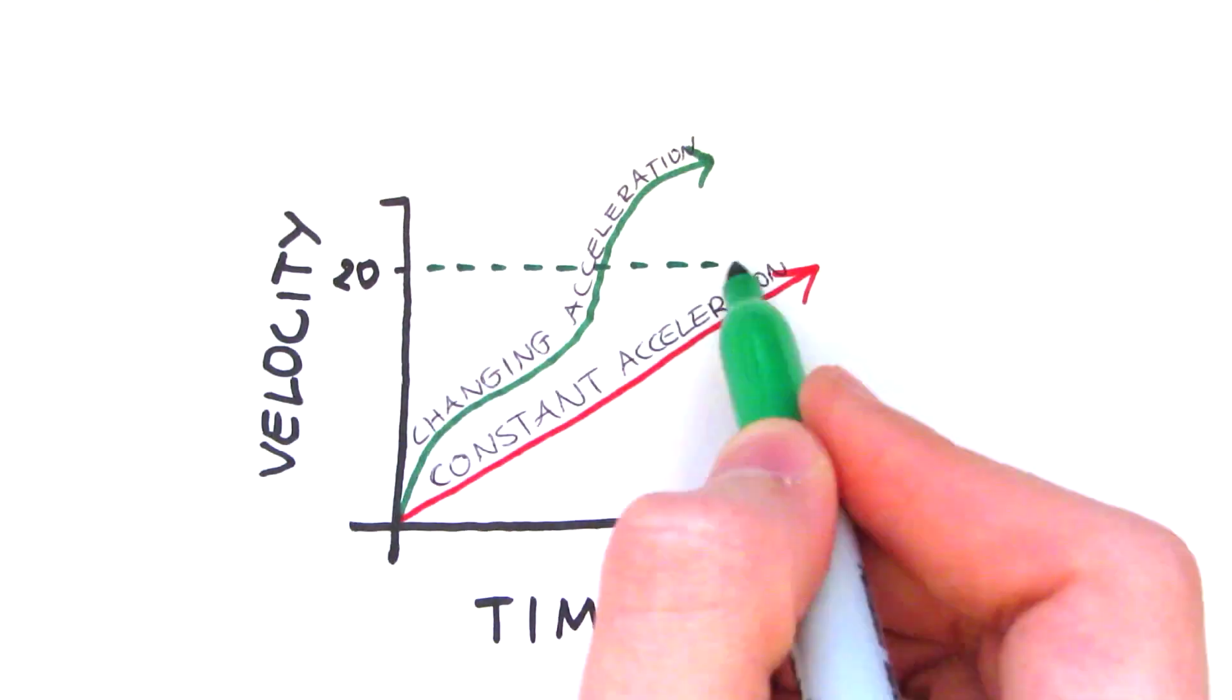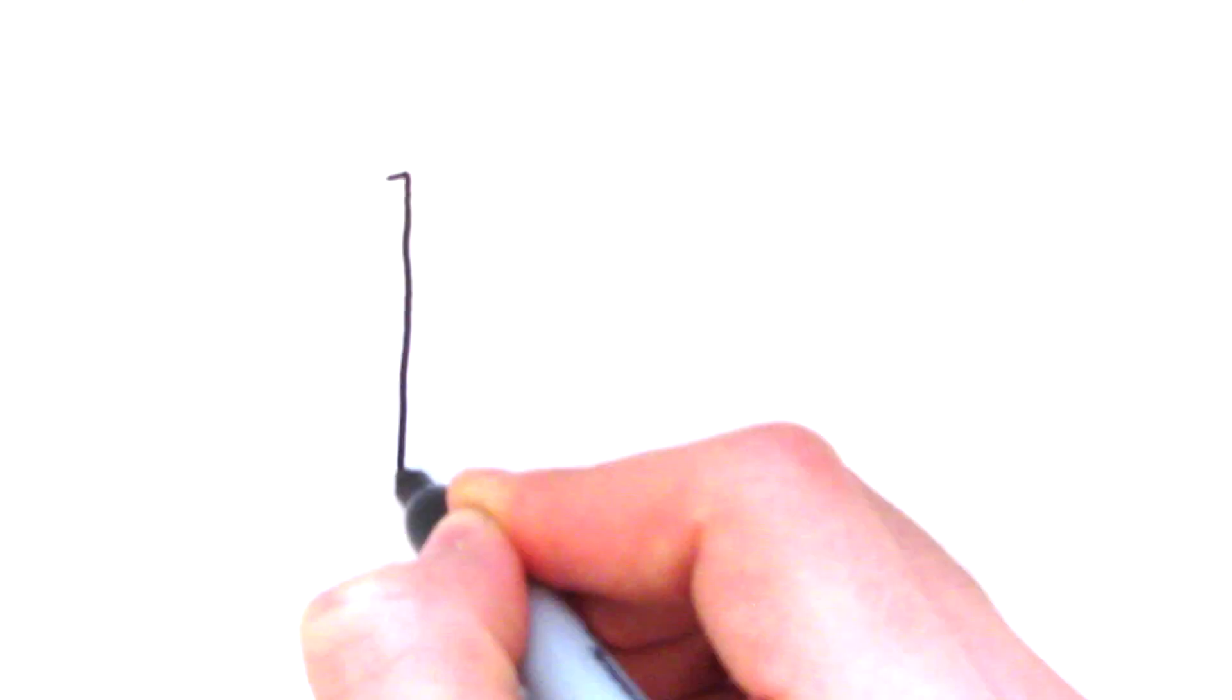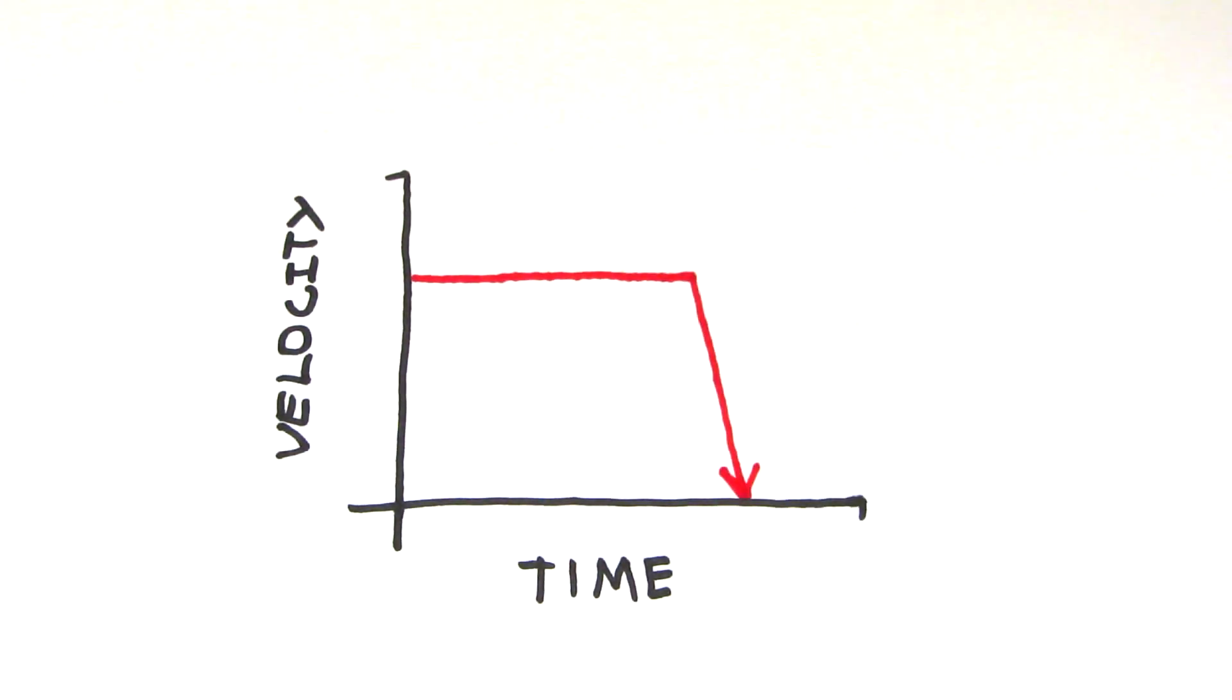You can work out the acceleration of an object by dividing the change in velocity by the time it took to fall. If the graph shows a horizontal line, the object is travelling at a constant speed. When the graph starts to slope back to the origin, it means the object is decelerating.